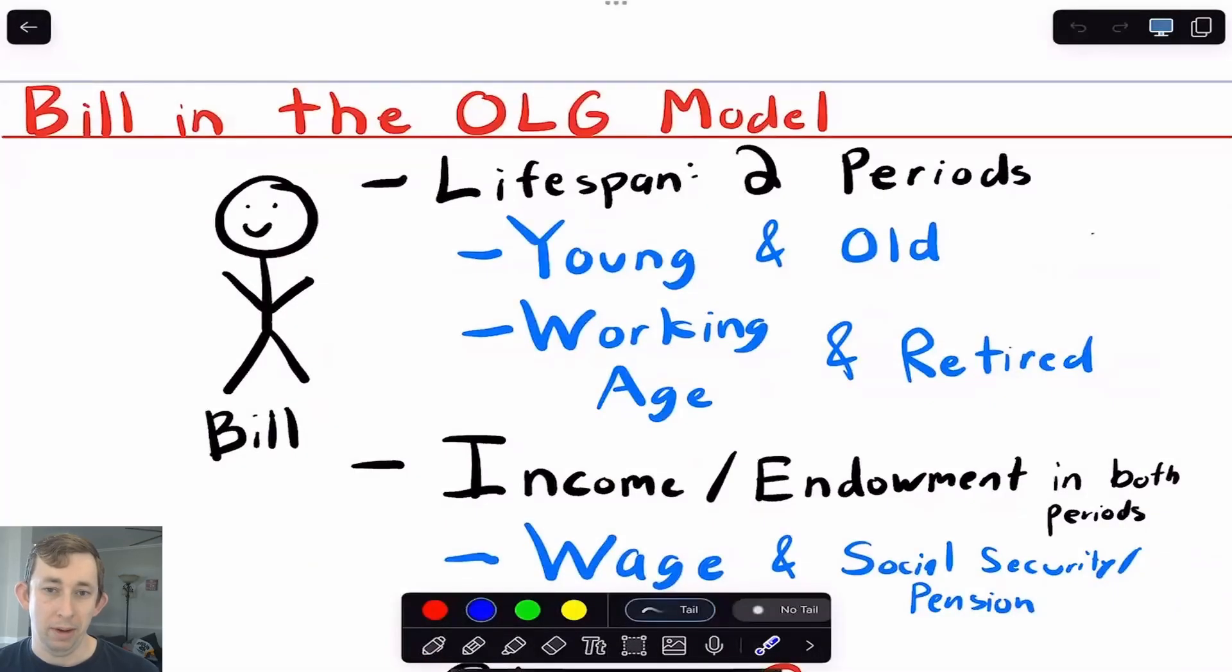So of course, we're talking about a macro model, which means we're going to feature Bill. So in this world, Bill lives for two periods, we're going to call it young and old, or if that's not as helpful, you can think of the first period of Bill's life as sort of like working age, this is when he's working, and he retires when he's old, and he's going to get an income or an endowment in both periods.